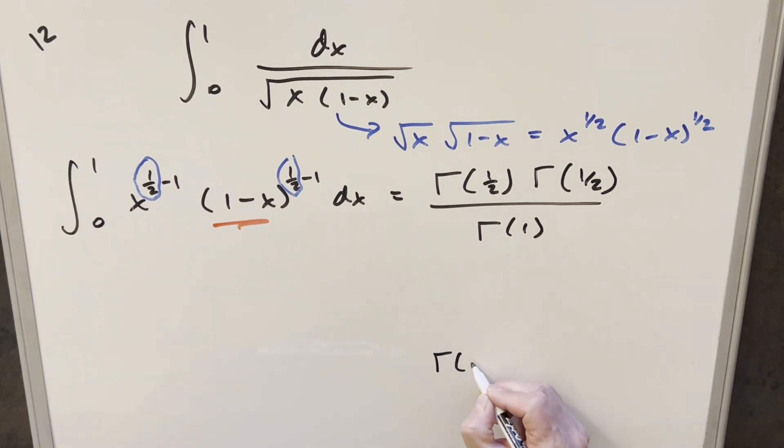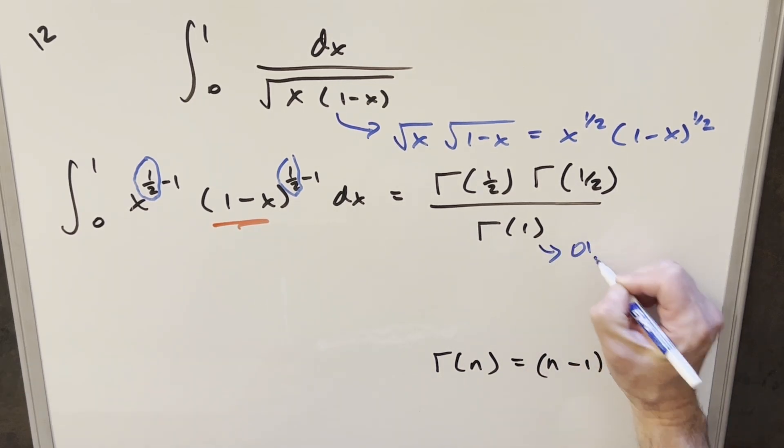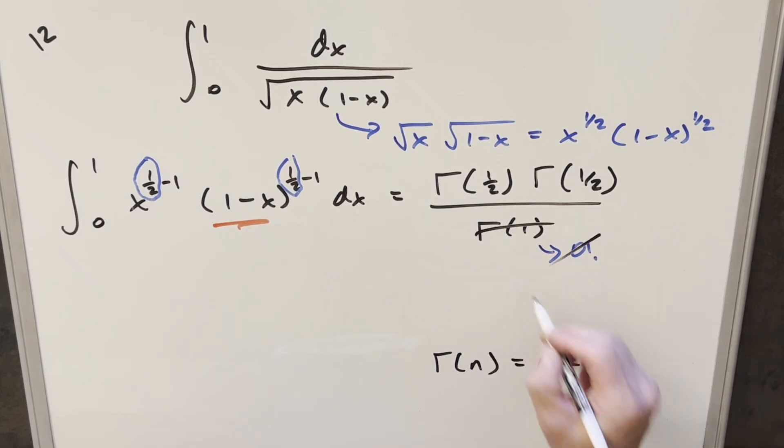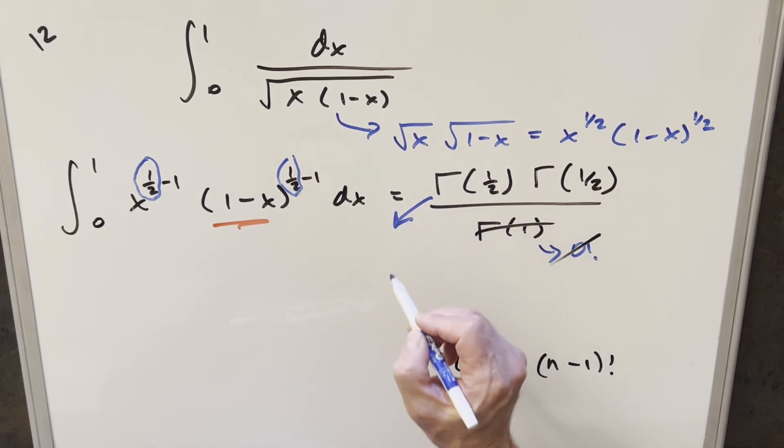For gamma of 1, we can use this definition. Gamma of n is going to be the same thing as n minus 1 factorial. So then this right here, we can see this as 0 factorial, which is just 1. And so what we can do is just cancel this off right here.